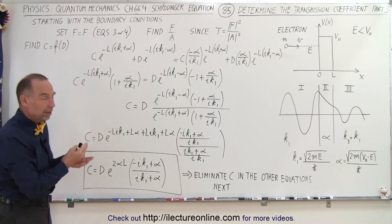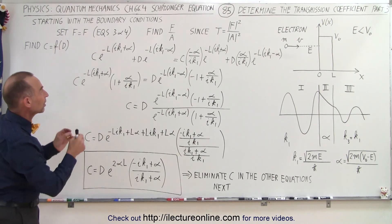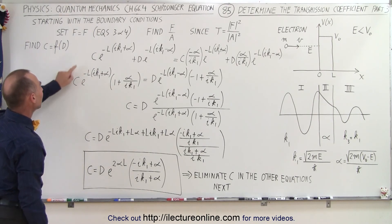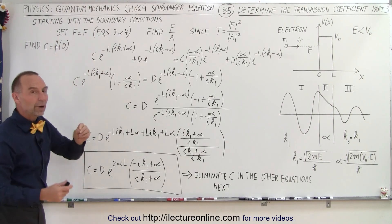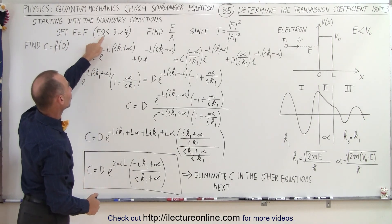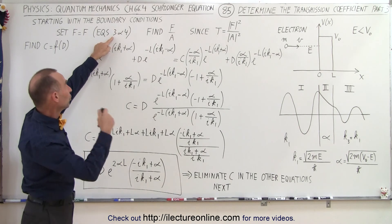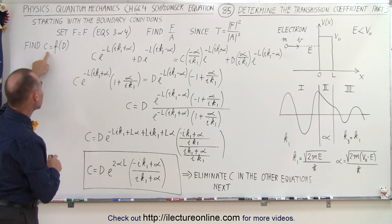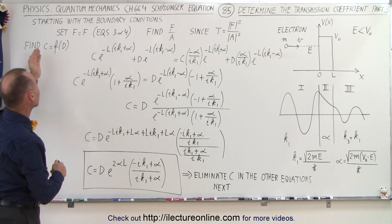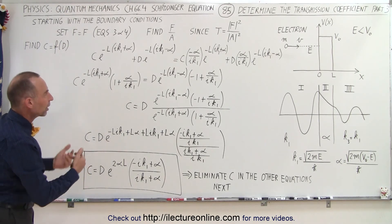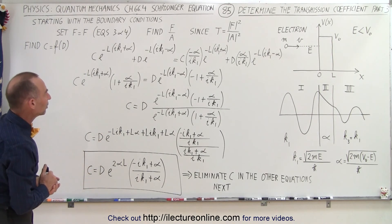So far, we have already worked on it for a couple of videos here. We're trying to find that ratio F over A, and the next step is to set the two equations that we solved for F equal to one another. Those were equations 3 and 4 from the boundary conditions, which you can look at in the previous video. Then we're going to solve for C in terms of D. In other words, we're going to say C is a function of D. Remember, C and D are coefficients, or constants, coming from our boundary conditions.